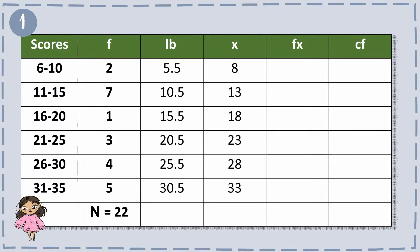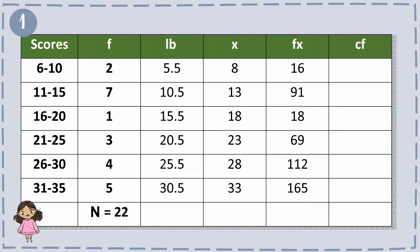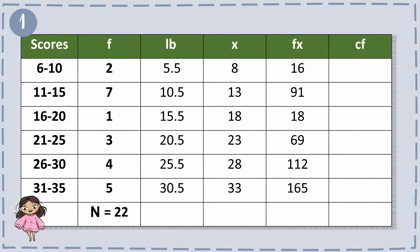For the fx, all we have to do is multiply the value of f and x. So we have 2 times 8 equals 16, 7 times 13 equals 91, 18 times 1 equals 18, and so on. Then we compute for the sum of all fx values, which gives us 471.